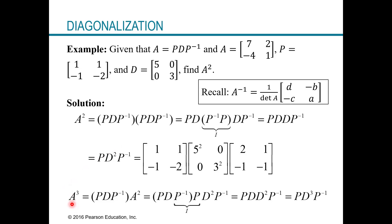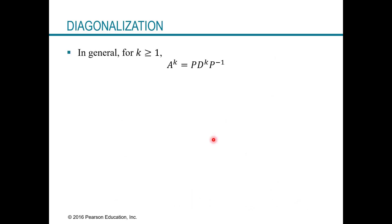If we wanted A cubed, we get P times D cubed times P inverse. The reasoning is the same: A cubed is A times A squared, and associating the P and P inverse in the middle gives the identity, leaving a total of D cubed in the center. In general, A to the K equals P times D to the K times P inverse, as long as we can find D, P, and P inverse.